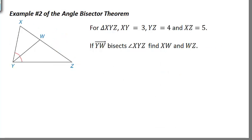Let's take one more quick example here. We'll do one more—same diagram, just a little different given information. It says that XY is 3, YZ is 4, XZ (so the entire side here) is 5, and again if YW is the angle bisector, we're going to try and find the length of both XW and WZ.